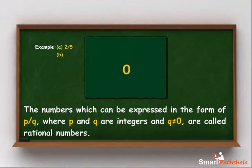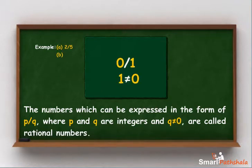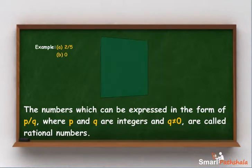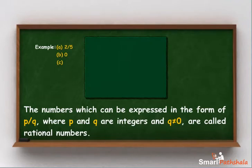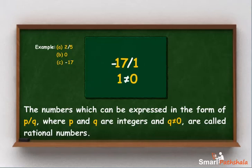0 is a rational number as 0 can be written in the form of 0 upon 1, where 0 and 1 are integers and 1 is not equal to 0. Also, minus 17 can be written as minus 17 upon 1, where minus 17 and 1 are integers and 1 is not equal to 0.